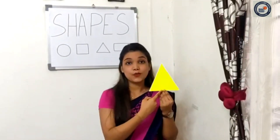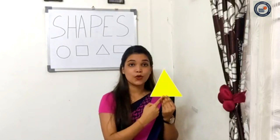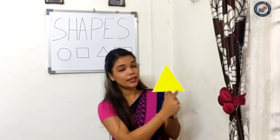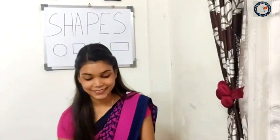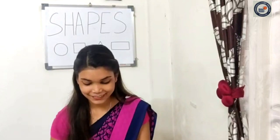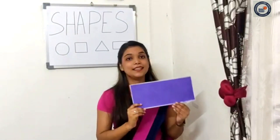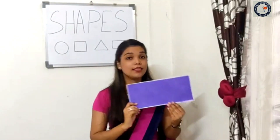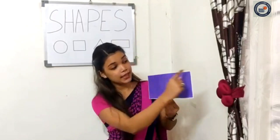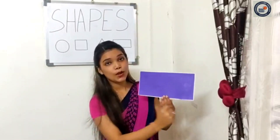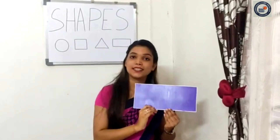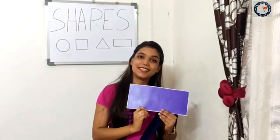This is a triangle, this is a triangle. It is pointy pointy. It has three sides. This is a triangle, this is a triangle. This is a rectangle, this is a rectangle. It has two small sides and two big sides. This is a rectangle, this is a rectangle.